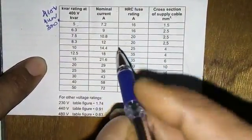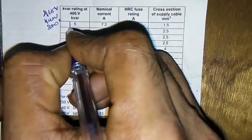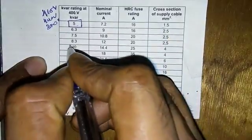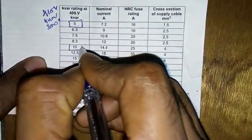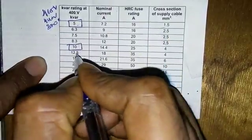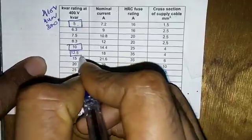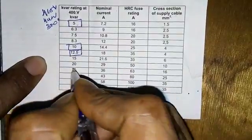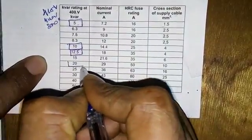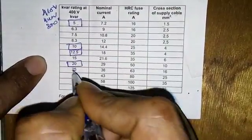So we have the popular capacitor ratings: 5kVAr, 10kVAr, 12.5kVAr, 20kVAr, 25kVAr, and 50kVAr.